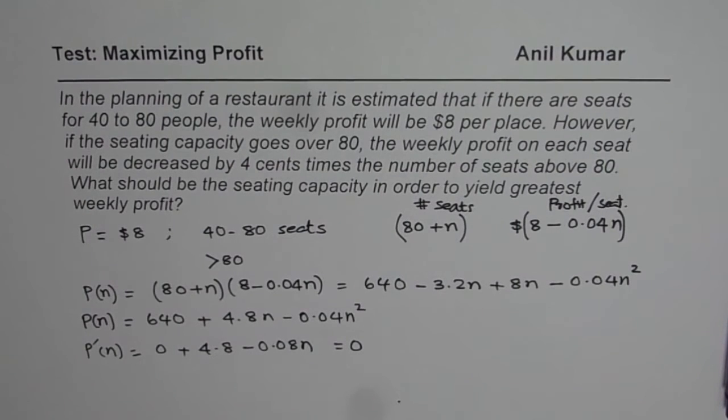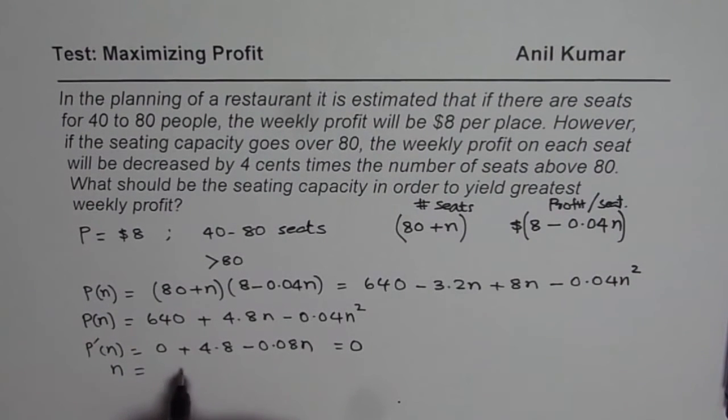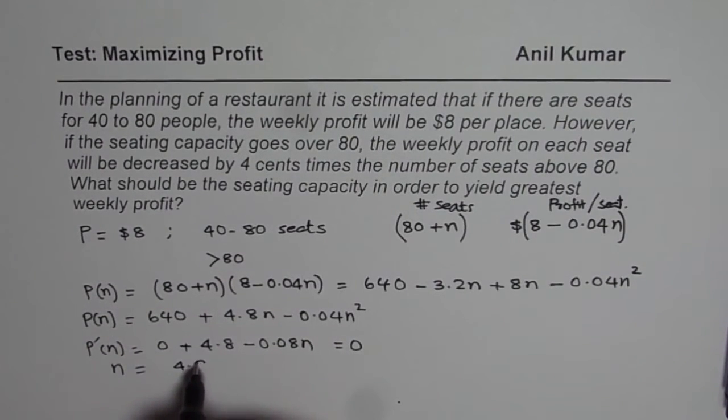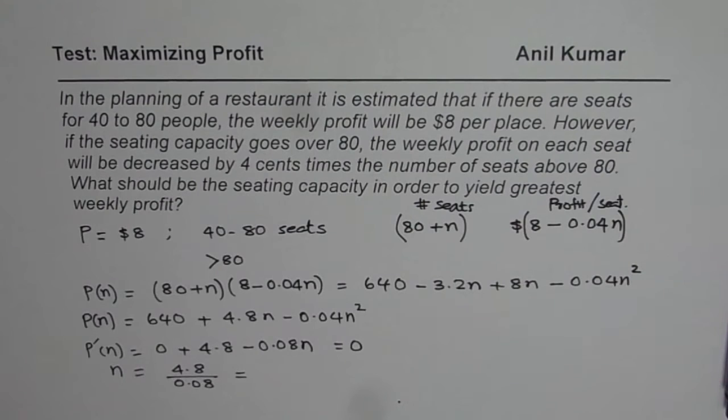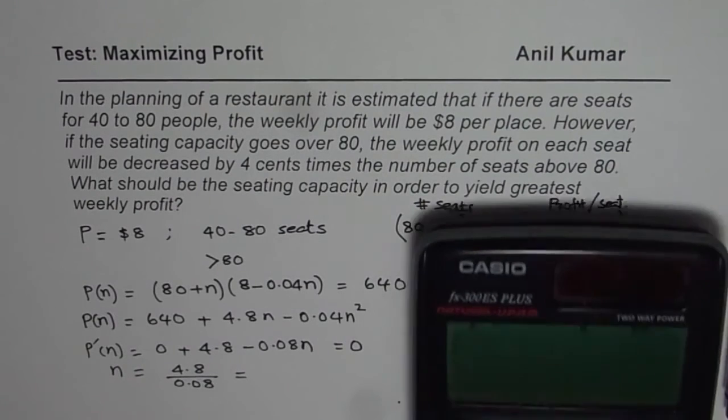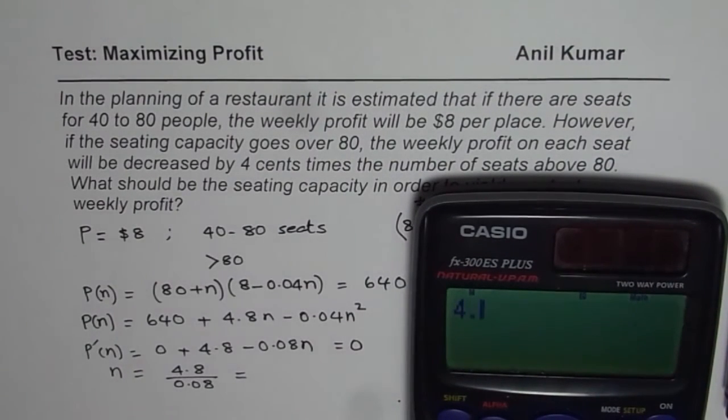Now we can find what N is. And from here, we can calculate N as equal to 4.8 divided by 0.08. So you can divide 4.8 by 0.08. That gives us 60.